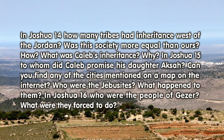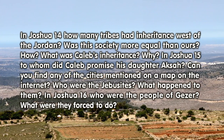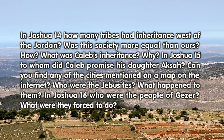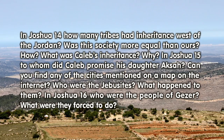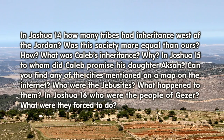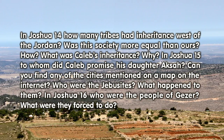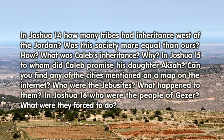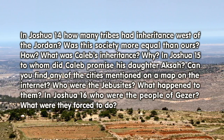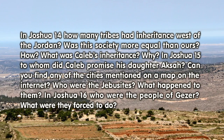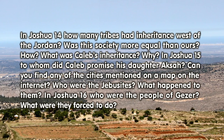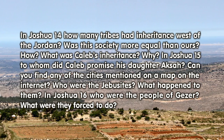In Joshua 15: To whom did Caleb promise his daughter Aqsa? Can you find any of the cities mentioned on a map on the internet? Who were the Jebusites? What happened to them?